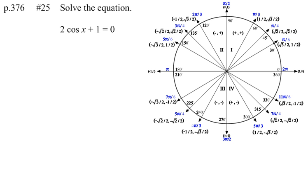Page 376, number 25. Solve the equation: 2 times the cosine of x plus 1 equals 0. Alright, the first thing we want to do to solve these is get our trigonometric expression by itself. So first, let's subtract 1 from both sides.